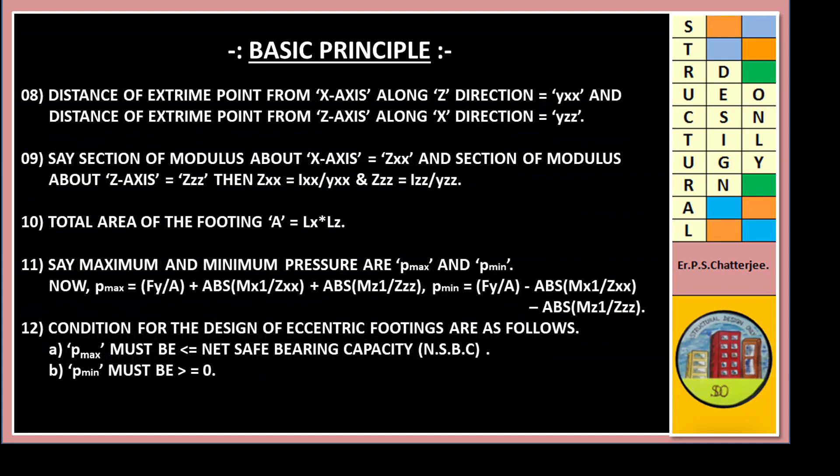Distance of extreme point from X-axis along Z-direction equals YXX and distance of extreme point from Z-axis along X-direction YZZ. ZXX equals IXX by YXX and ZZZ equals IZZ by YZZ. Total area of the footing A equals LX times LZ.